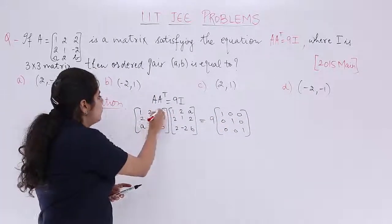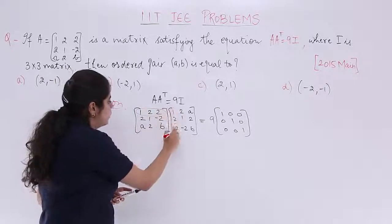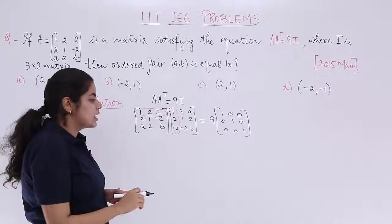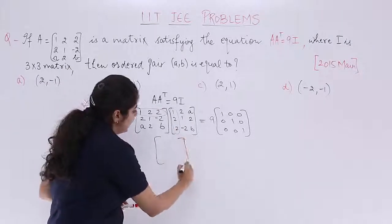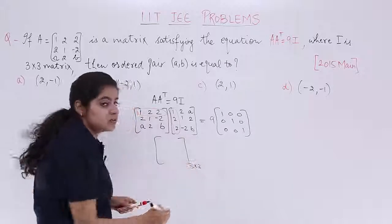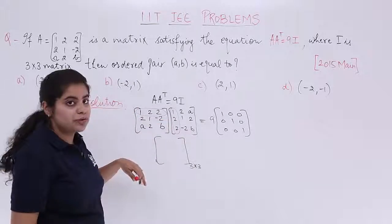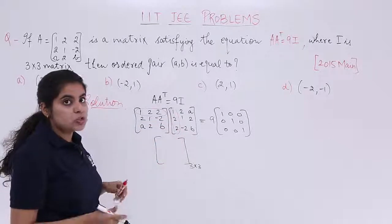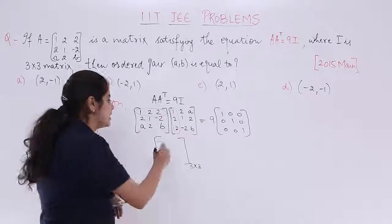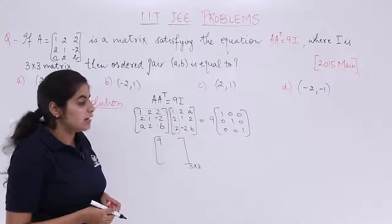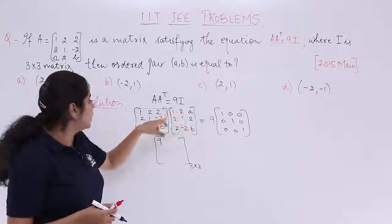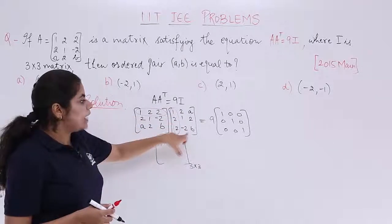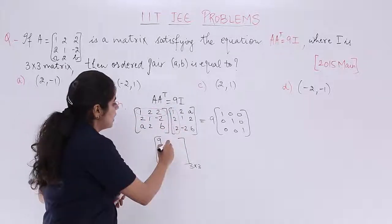So first row, first column. So it is 1 times 1 is 1, 2 times 2 is 4, 2 times 2 is 4. So 4 plus 4 plus 1 is 9. Next, first row, second column. Now do it accordingly. 1 times 2 is 2, 2 times 1 is 2, and here 4 minus 4 becomes 0.